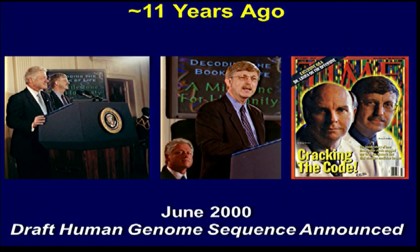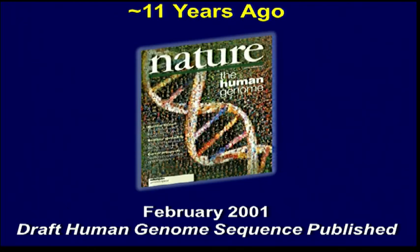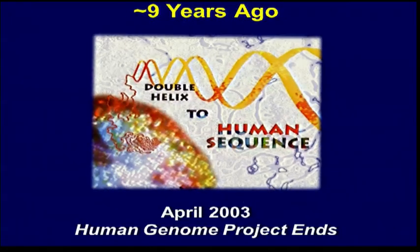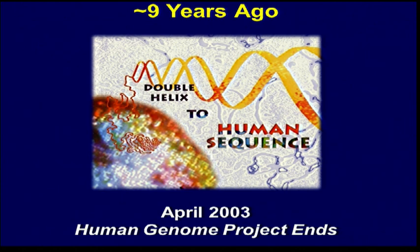A short 10 years later came the announcement that a draft sequence of the human genome had been generated, capturing lots of attention by leaders around the world — even the White House was involved, and the popular press picked this up as a story of major historic significance. The scientific moment came with publications, and just a few months later came this historic publication in Nature 11 years ago, reporting the initial analysis and generation of that draft sequence. It wasn't complete — just a draft sequence that needed lots of refinement. Back to the laboratories we went, refined that sequence, and then completed it in April of 2003, declaring completion of a reference sequence of the human genome, and with that came an end of the Human Genome Project.